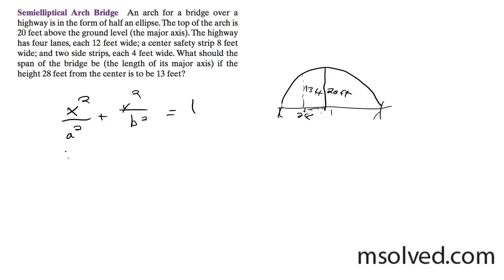So based off of that, we can go ahead and solve the problem. We have on top here x is 28 squared over a squared plus y squared, which is 13 squared, and then the absolute height is 20 squared equal to 1.